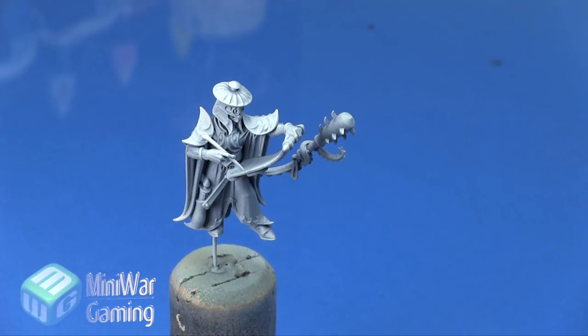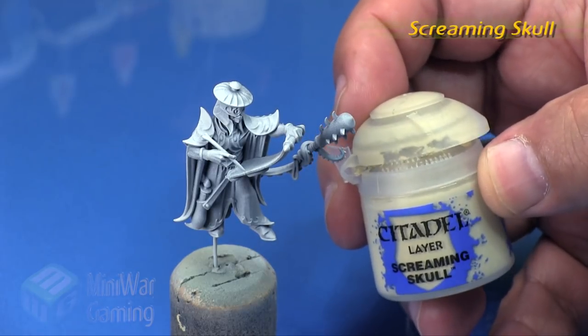He's been given a prime in light gray using Vallejo's surface primer light gray, Badger Patriot 105 round 20 psi, and he has been kept separate from his octopus.